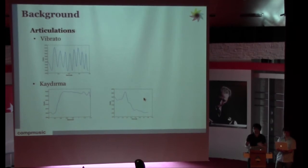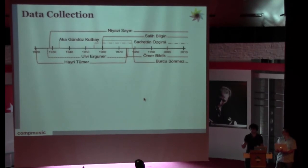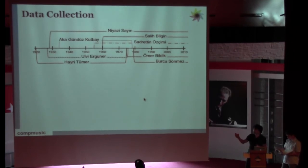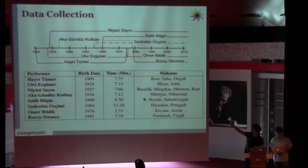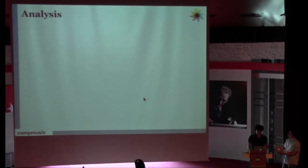For data collection, we tried to choose homogenous data: eight well-known performers. We tried to choose as far as we can to cover all the recorded area of ney performances. We tried to choose within different makams. These are the birth dates of the performers we chose.